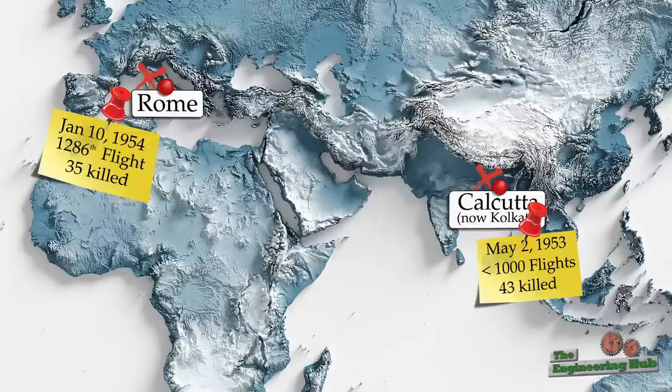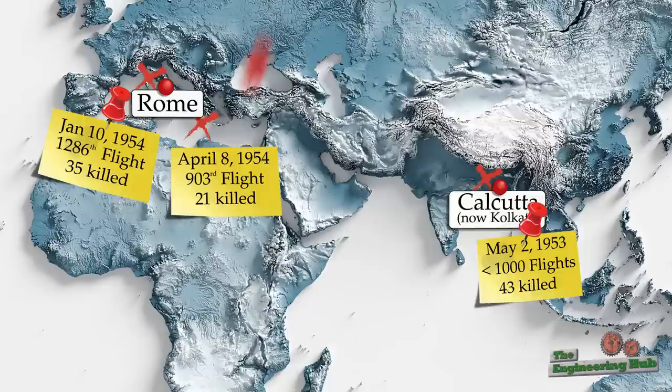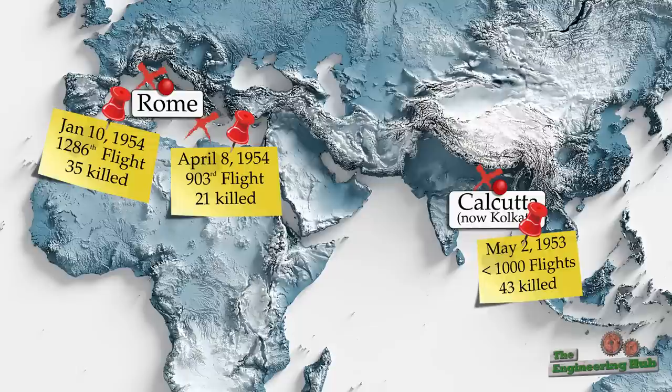Surely enough, only three months later, on April 8th, 1954, another similar crash occurred. A third Comet plane disintegrated in mid-air during its 903rd flight. At this point, it was undeniable, something was wrong. All Comets were grounded and a thorough investigation was launched.